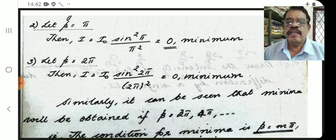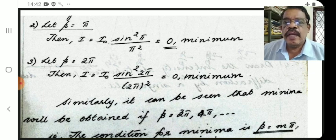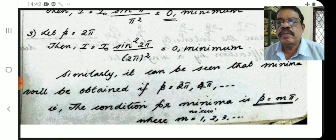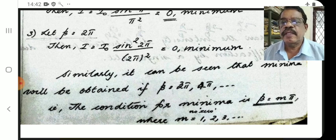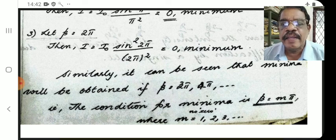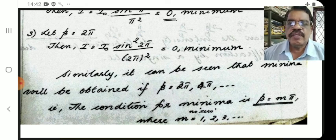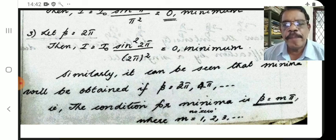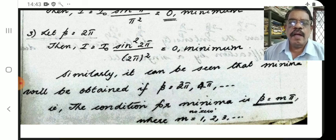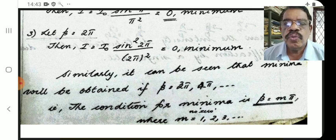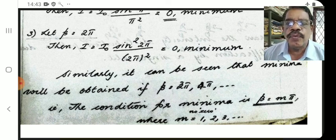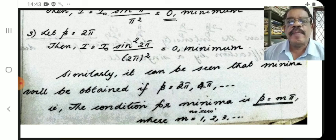So initially when β = 0 we get maximum light, and when β = π, 2π, 3π, etc., we get dark bands — minimum light. The condition for minima is β = mπ. Note we use m, not n, since n was already used for the number of small slits. Here m = 1, 2, 3, 4, etc. We do not include m = 0, because β = 0 is the maximum condition.